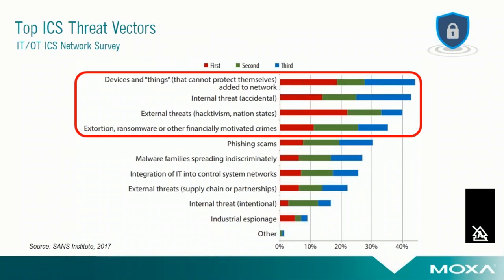Looking at the top three threat vectors: devices and things that cannot protect themselves is a top concern. This includes devices that don't have proper security features, legacy devices that were never designed to be networked, or devices with known vulnerabilities that are not patchable. Another top threat vector is internal or accidental threats, such as an employee plugging a laptop into an open port on the ICS and infecting it. The threat vector that gets the most press is external hackers or even nation states that have made headlines in recent years.